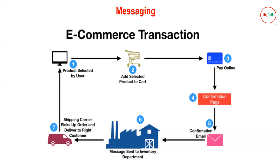After placing the order, it goes to the vendor and then to multiple stakeholders in the e-commerce business. As the end customer, once the order goes to the vendor, the vendor dispatches the product to you. In between you receive SMS and email confirmations, and you can check your order status on the website or mobile app. Everything happens digitally, meaning information is being processed from one location to another.